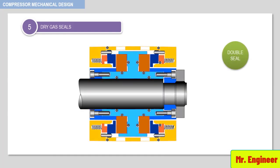A double arrangement is a sealing system which reliably prevents product gas from escaping to the atmosphere. It involves feeding a buffer gas between the seals at a higher pressure than the product pressure. Part of the buffer gas leakage escapes to the atmosphere side and the other part to the product. Typical applications are found mainly in the petrochemical and refining industries.